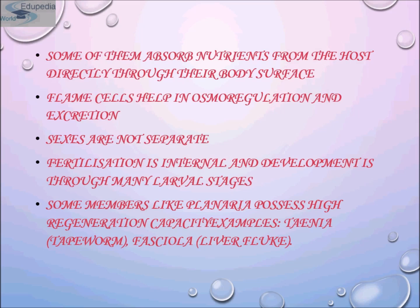All except the simplest flatworms have nephridial tubules called proto-nephridia, which is a primitive form of kidney, usually distributed throughout the body. These consist of an external opening and a tubule that branches internally, terminating in blind bulb-shaped structures called flame bulbs, which bear tufts of cilia. They probably function as excretory and osmoregulatory organs.